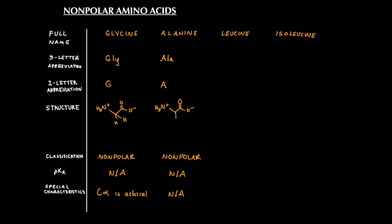Now let's move on to leucine. Its three-letter abbreviation is LEU, and the one-letter abbreviation is L — pretty intuitive. Its structure is slightly more complex but not too much. After drawing the backbone, we go one carbon out, two carbons out, and then draw a V of two carbons, giving us four carbons total in the R group. Its classification is nonpolar. Its PKR is also non-existent because it does not have an acidic hydrogen in its R group. Special characteristics are not within the scope of the MCAT.